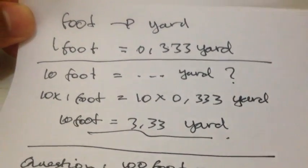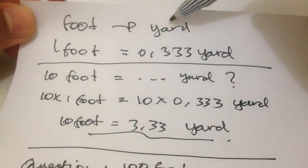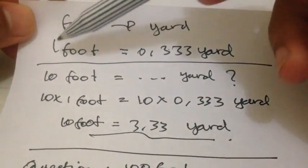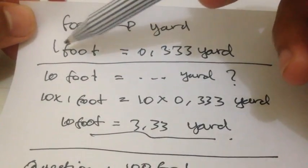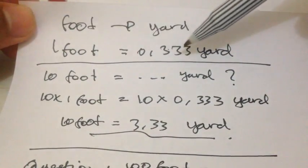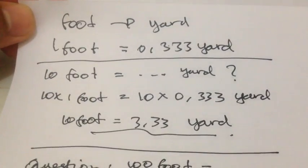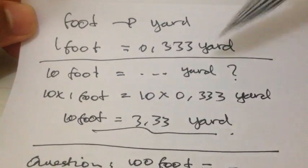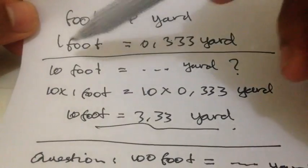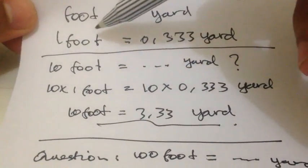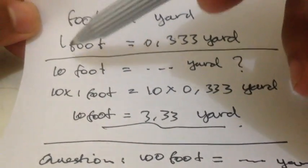Hello, what's going on? Number one, today we are going to convert foot into yard. Well, the basic rule of this conversion is one foot is equal to 0.333 yards, repeating threes.